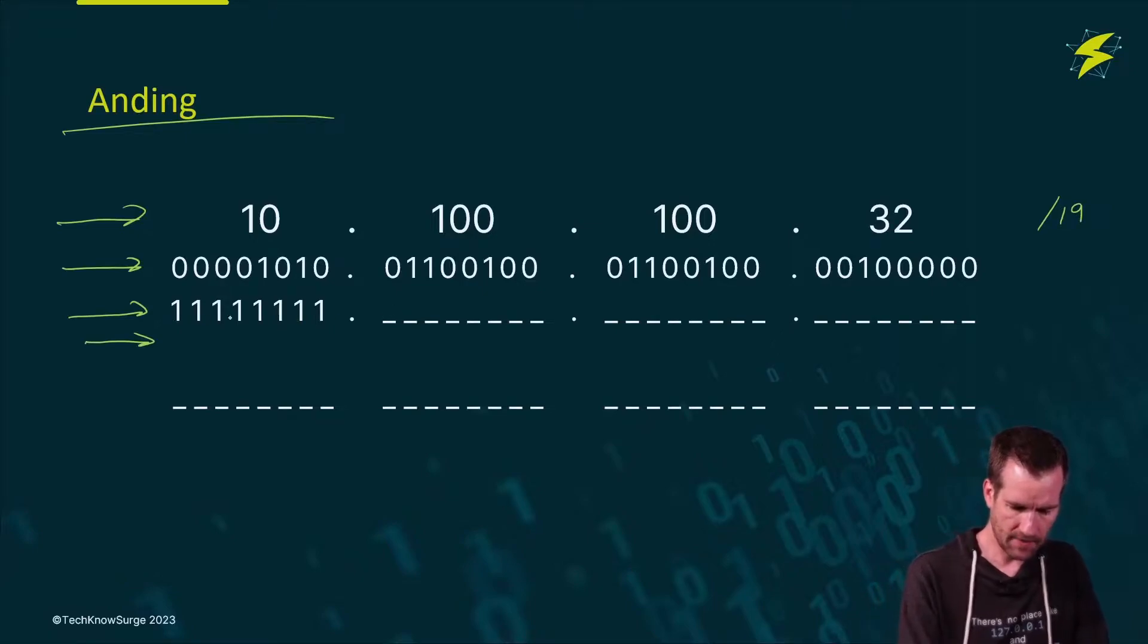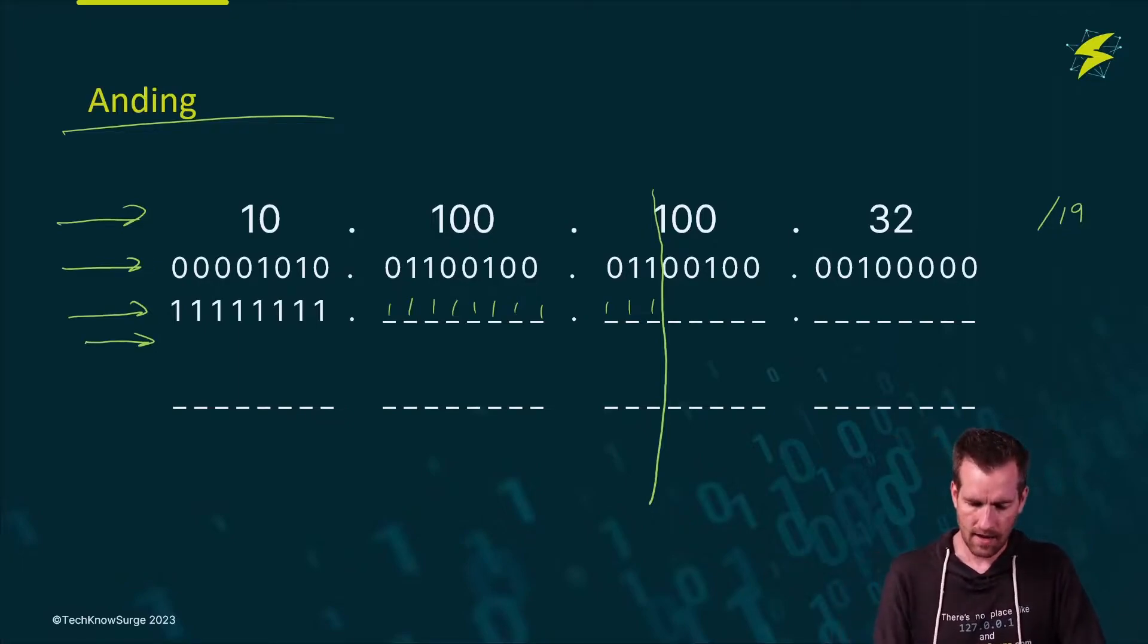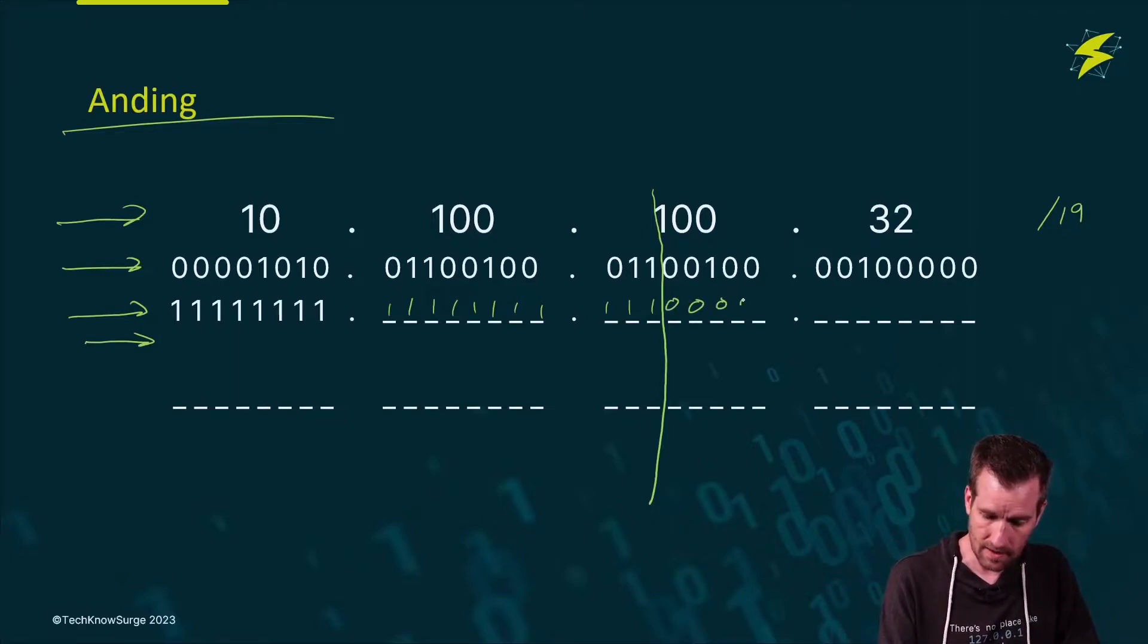If I count this out, there's 8 ones, 9, 10, 11, 12, 13, 14, 15, 16, 17, 18, 19. So I'm splitting this right here. That's where we're going to split this off at. And the rest of these for the mask is going to be 0 because these are all host bits.